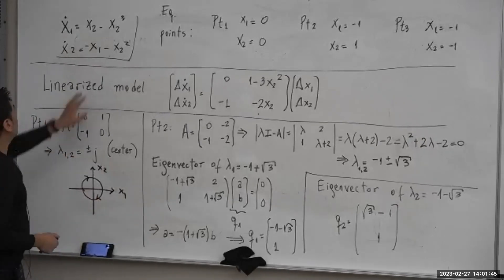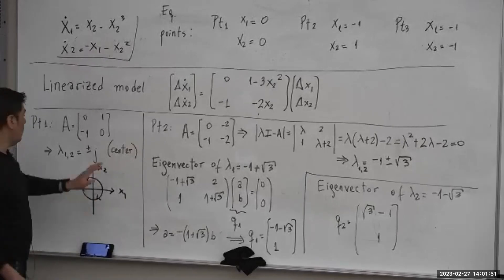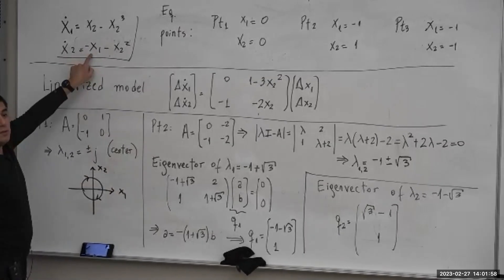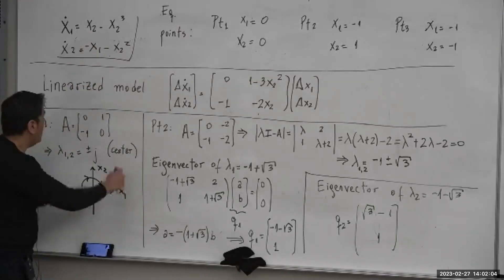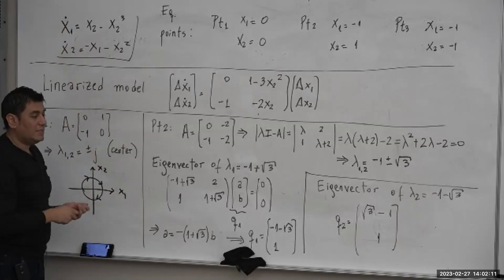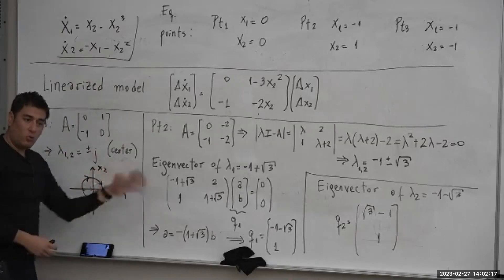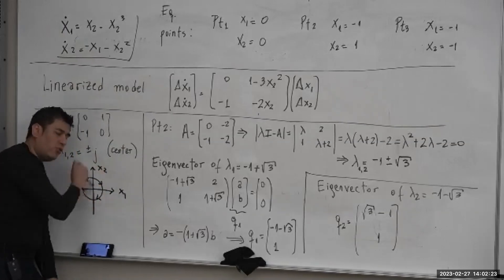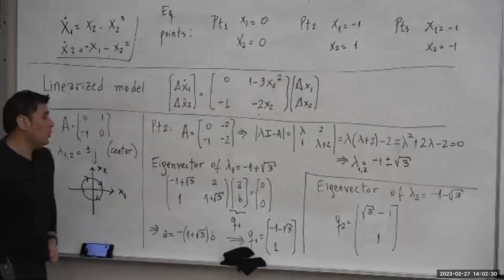Similarly, if x1 is positive — in the first quadrant — x-dot-2 equals negative x1, so x2 decreases. If x1 is negative, x2 increases. By looking at the state space representation we can infer how the oscillation behaves. In this case we have a center, with a closed periodic trajectory moving clockwise.